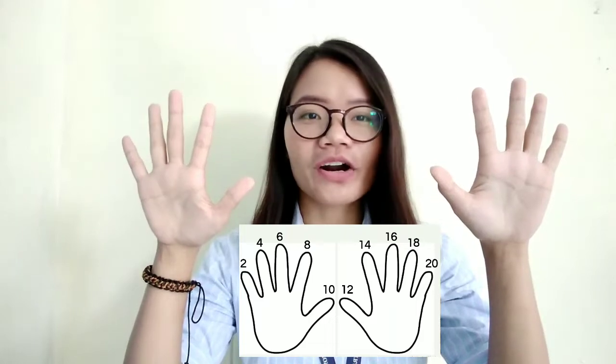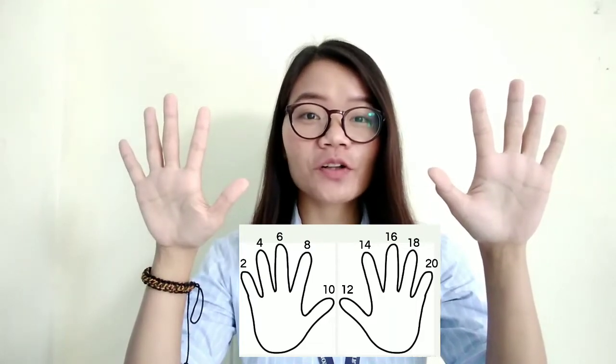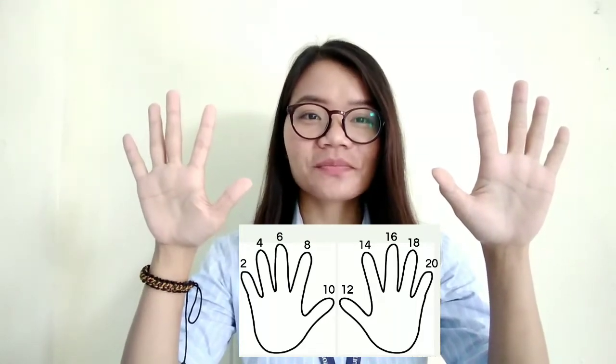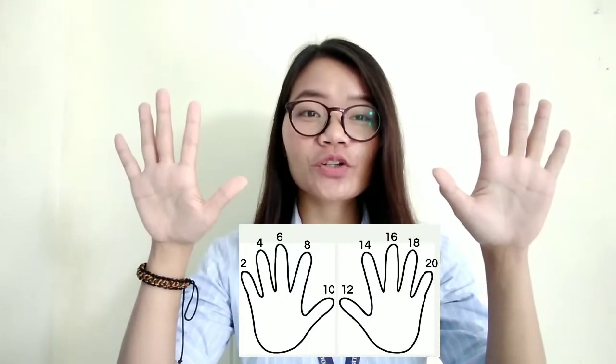So it becomes 2, 2 plus 2 is equal to 4, 4 plus 2 is equal to 6, 6 plus 2 is equal to 8, 8 plus 2 is equal to 10, and so on. We can also use this to remember multiplication 2.